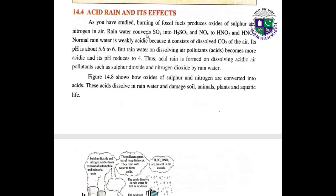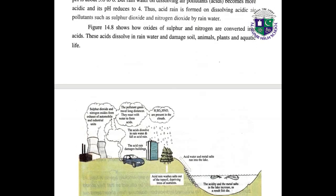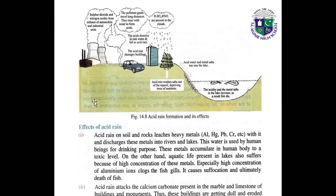What is acid rain and what are its effects? Burning of fossil fuels produces oxides of sulfur and nitrogen in air. Rain water converts SO2 into H2SO4 and NO2 into HNO2 and HNO3. Normal rain water is weakly acidic because it contains dissolved CO2 from the air; its pH is about 5.6 to 6. But rain water dissolving air pollutants becomes more acidic and its pH reduces to 4. Acid rain is formed when acidic air pollutants such as sulfur dioxide and nitrogen dioxide dissolve in rain water. This picture shows the formation and bad effects of acid rain.